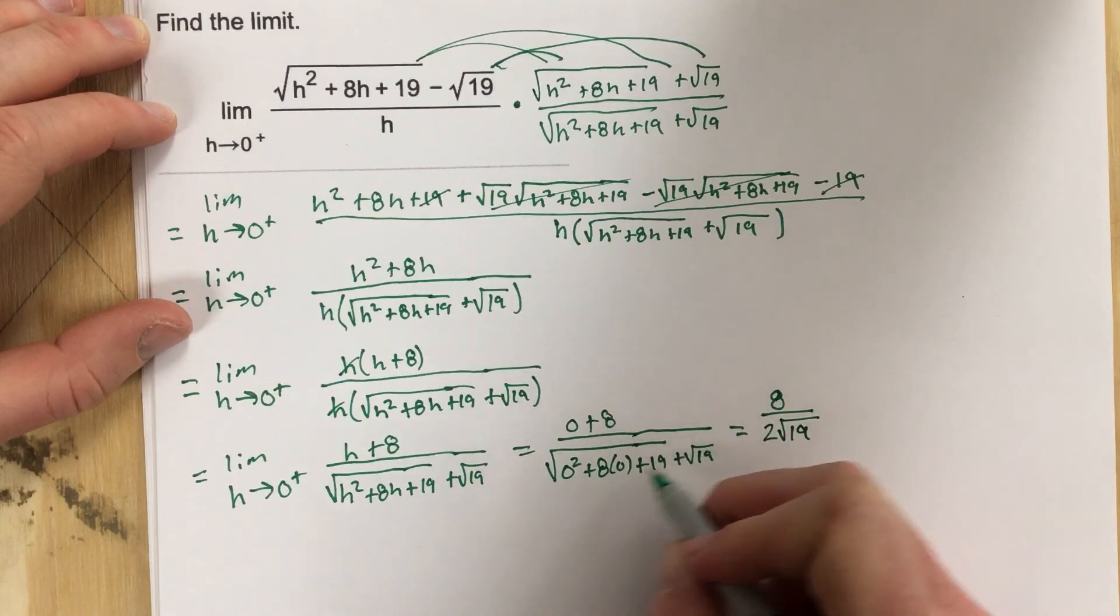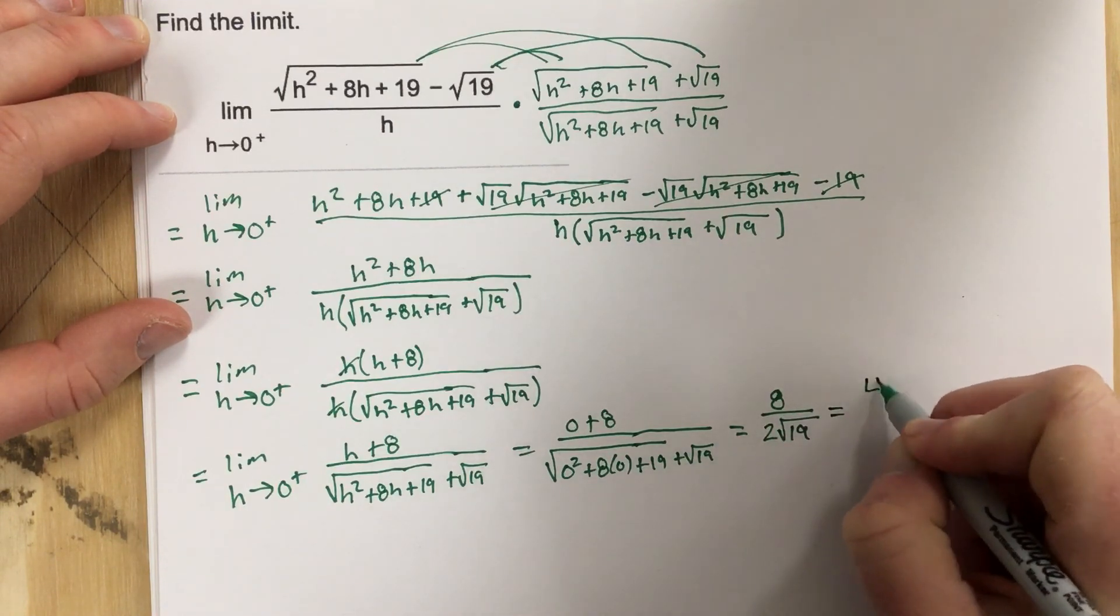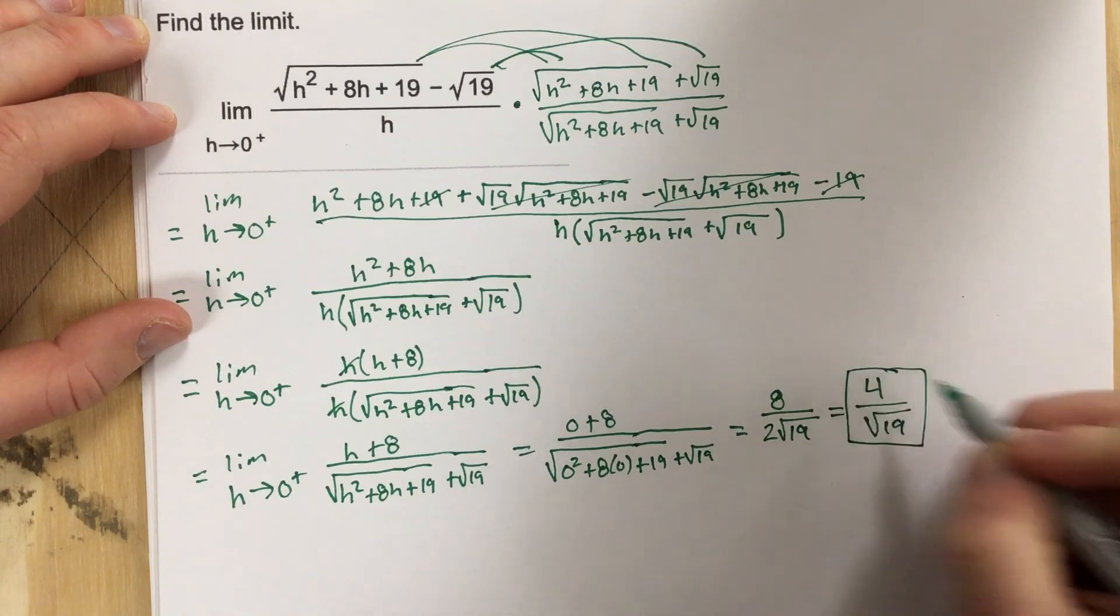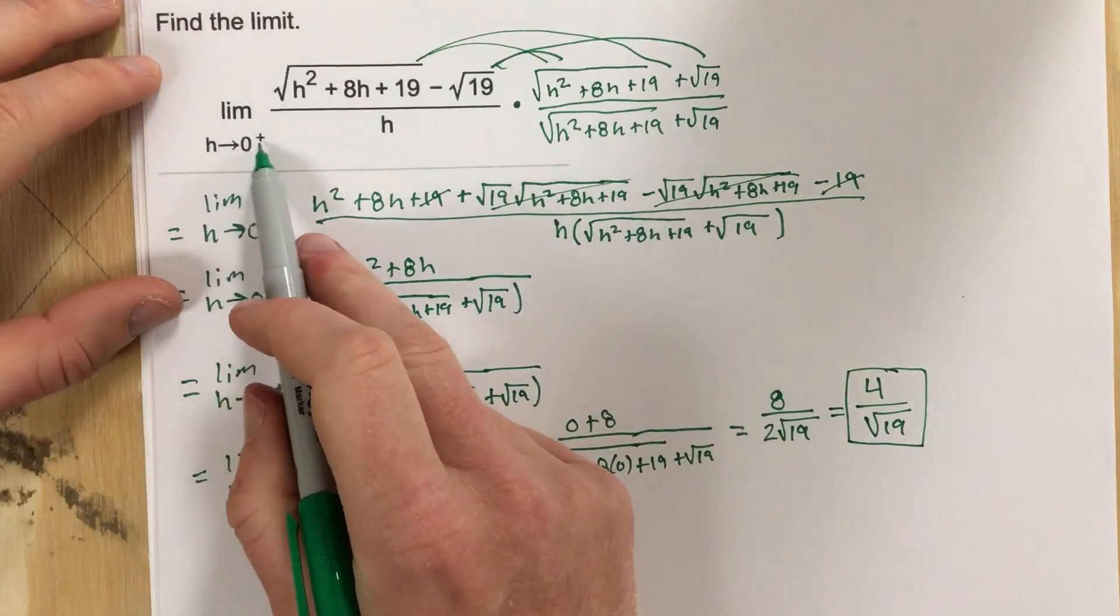I have root 19 plus root 19 here. We can cancel there and we're left with 4 over root 19. So 4 over root 19 is our limit as h approaches 0 from the right.